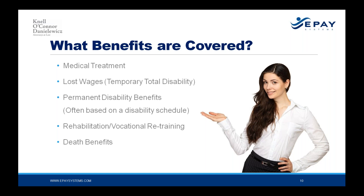Here in Illinois, each body part is assigned a certain value, and that's where dollar amounts are calculated. Another benefit is rehabilitation and vocational retraining, which comes into play when a worker in a physically demanding trade cannot return to that same position — workers' compensation covers training and assistance getting them placed in a new vocation. The last benefit is death benefits, providing survivor benefits to the deceased employee's family, with state laws identifying who qualifies as a beneficiary.